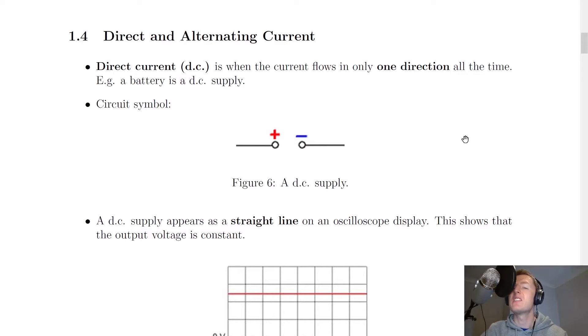And here's the circuit symbol for a DC supply. You'll notice we've got two little circles with a positive and a negative terminal, and that is just the same as having a battery. So you might also see a DC supply drawn as a bigger line for the positive terminal and a smaller line for the negative terminal, just like a normal cell.